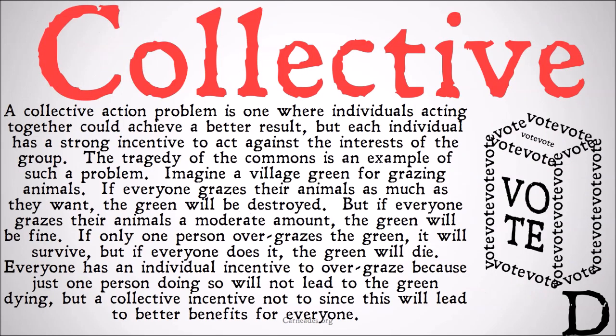A collective action problem is one where individuals acting together could achieve a better result, but each individual has a strong incentive to act against the interests of the group. The tragedy of the commons is a classic example. Imagine a village green — a large grassy patch in the middle of an old-fashioned village for grazing your animals. If everyone grazes their animals as much as they want, the green will be eaten and destroyed, and it'll be no use for anyone, and the animals will eventually starve.